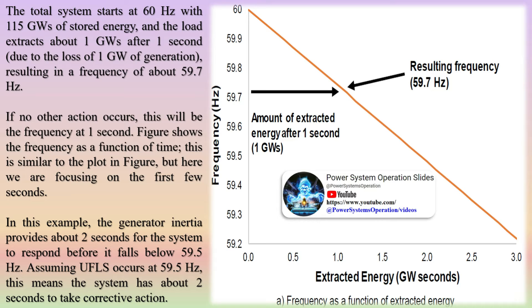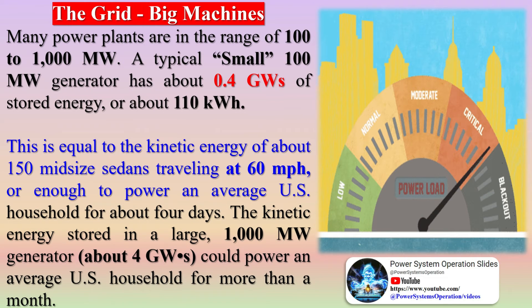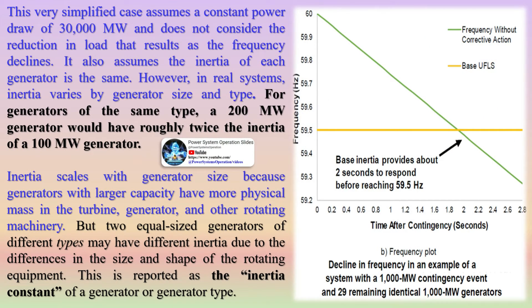Two equal-size generators of different types may have different inertia due to differences in the size and shape of the rotating equipment. This is reported as the inertia constant of a generator or generator type. Inertia scales with generator size because generators with larger capacity have more physical mass in the turbine, generator, and other rotating machinery. The combination of inertia constant and total capacity of online generators determines the total inertia provided by the generators.